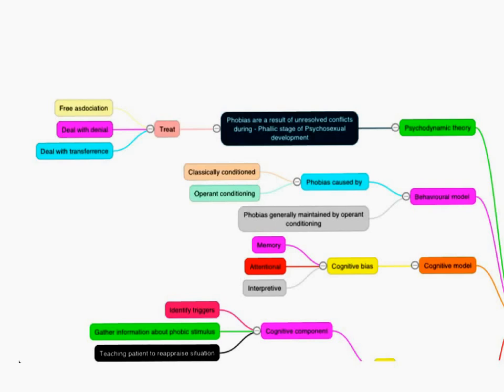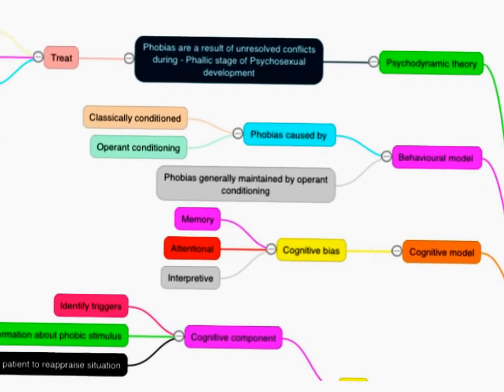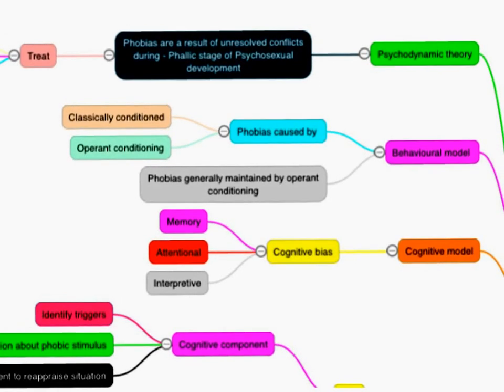Or, thirdly, we could have the cognitive model, where the patient has developed a cognitive bias. They might have a memory bias of an incident that occurred as a child, where they only focus on, say, a negative experience that occurred during camping, when there were floods, or maybe a fire, and forgetting all the good stuff that happened.